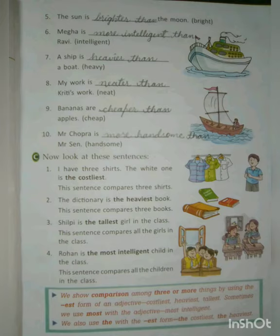Let's talk about the next sentence: the sun is ___ than the moon. The word given in the bracket is 'bright'. Bright is an adjective that changes into 'brighter' in order to compare the two naming words sun and moon. Mega is more intelligent than Ruby. Ruby and Mega are naming words and 'intelligent' is the quality. Intelligent is a quality which exists in both naming words, but Mega is more intelligent than Ruby. We always put 'than' in order to compare two naming words.